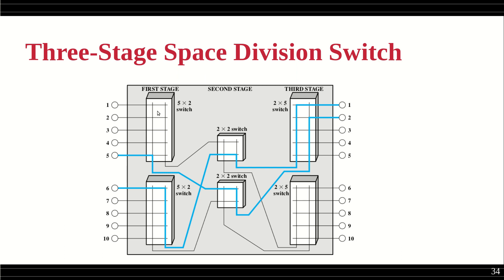With 10 inputs and 10 outputs, the multi-stage switch has: two 5x2 switches giving 40 cross points, plus four 2x2 intermediate switches giving 8 cross points — totaling only 48 cross points, compared to 100 in the single-stage crossbar. However, since there is no dedicated connection, if device 5 and device 2 are using certain cross points, another call wanting the same cross points may be blocked. The single-stage crossbar provides non-blocking communication; this does not.